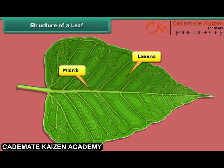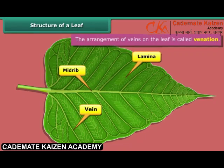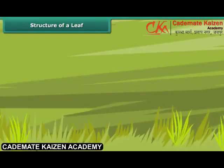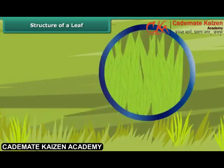The thin lines branching from the midrib are the veins. The arrangement of veins on a leaf is called venation. When veins appear to branch from the midrib, the venation is called reticulated venation. When the veins run parallel to one another, the venation is termed as parallel venation. This type of venation is generally found in the leaf of grass.